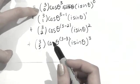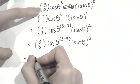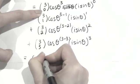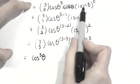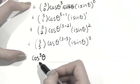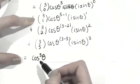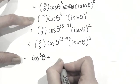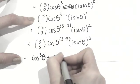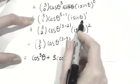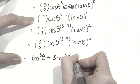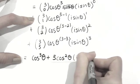So 3 choose 0 is just equal to 1, so it equals cos cubed theta. And i sine theta to the power of 0 is just equal to 1, so we keep it as it is. Then we have 3 choose 1, which is 3, and then cos squared theta. i sine theta to the power of 1 is just i sine theta, so we just leave it like that.